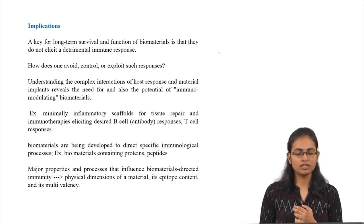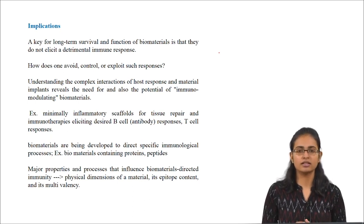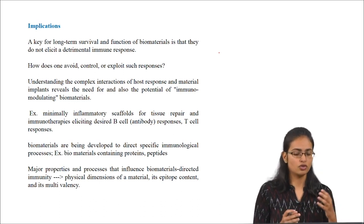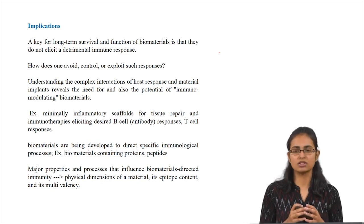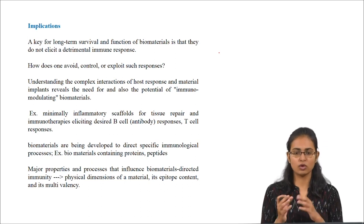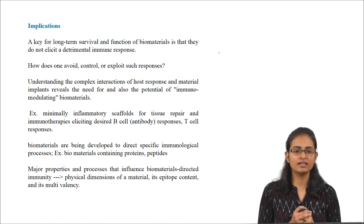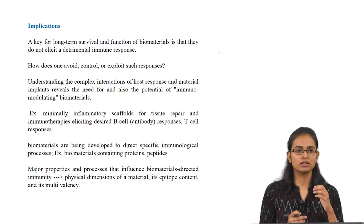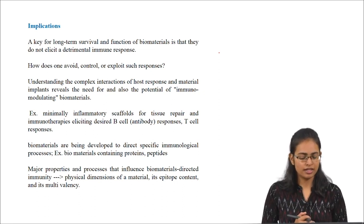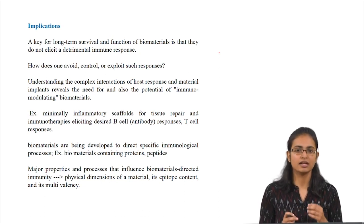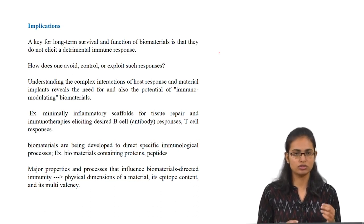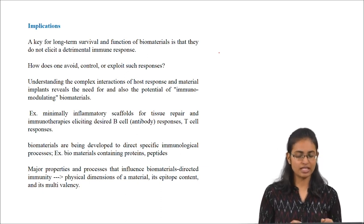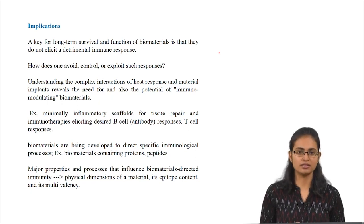What are the implications? A key for long-term survival and function of biomaterials is to reduce the detrimental immune response to biomaterials. To avoid or control such responses, a start would be to understand the complex reactions that occur between the host and the material, so that we can design immunomodulating materials which can elicit desirable responses from the host system. An example would be minimally inflammatory scaffolds which can elicit desirable B cell and T cell responses, and biomaterials are being developed to direct specific immunological processes. Major properties of biomaterials to direct immunity are the physical dimensions of the material, its epitope content, and its multivalency. Thank you.